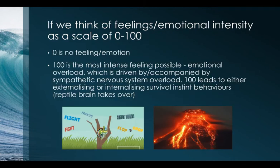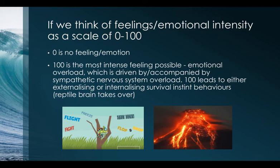Going back to part one, where we talked about individuals going from zero to a hundred in a split second — this is an illustration of poor interoceptive awareness. On a scale of feelings and emotional intensity, zero is no feeling and a hundred is the most intense feeling possible — emotional overload — driven by sympathetic nervous system overload. A hundred leads to either externalizing survival behaviors (fight, flight) or internalizing ones (freeze, flop and drop, shut down).